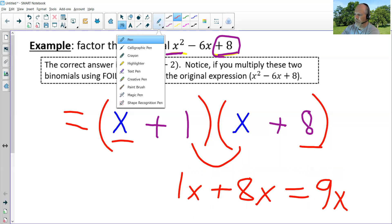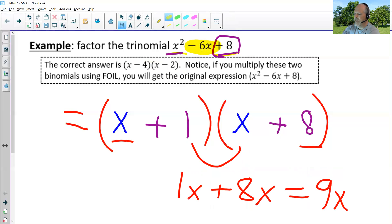However, what we need it to be is negative six x, and since one plus eight is not negative six, one and eight cannot be the correct factors. Even if we changed the pluses to minuses it still would not work because then we would just get negative one x minus eight x equals negative nine x, which is not negative six x. So that wouldn't work either.